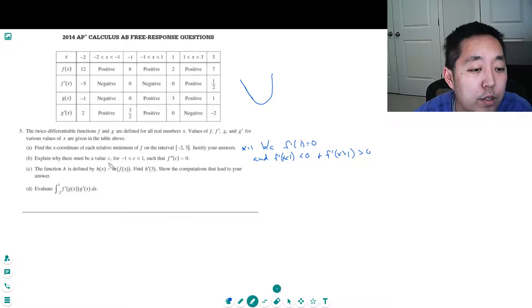Part B: Explain why there must be a value c between negative 1 and 1 such that the second derivative of c is 0. Well, if I look at f prime of 1 minus f prime of negative 1 over 1 minus negative 1, this is the average rate and that equals 0 over 2 which equals 0.